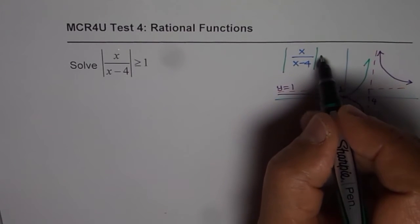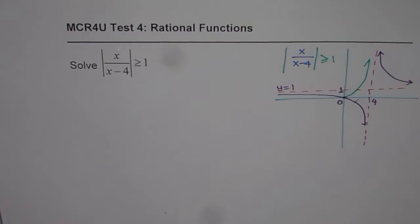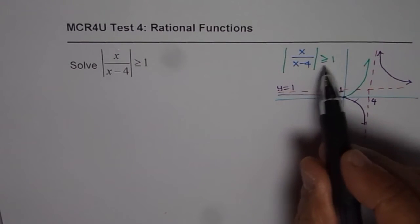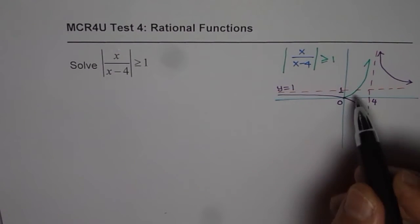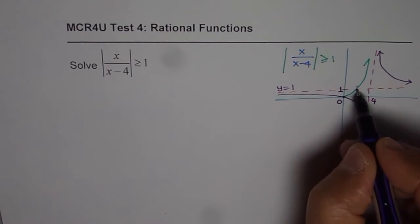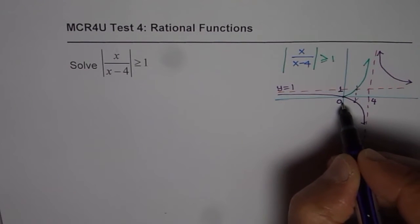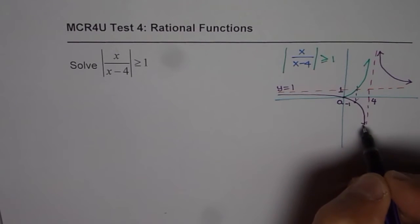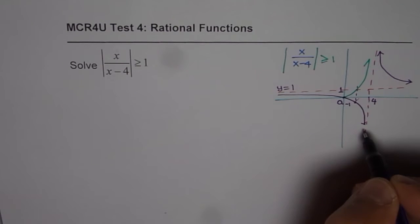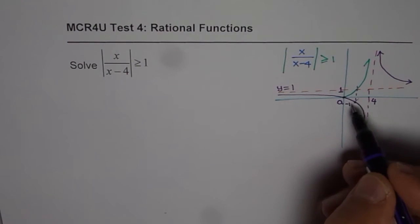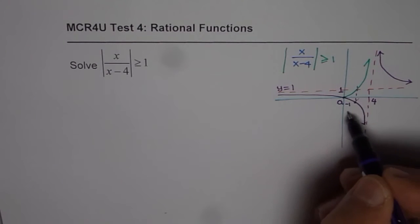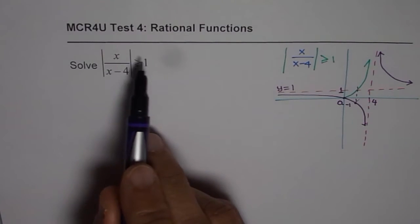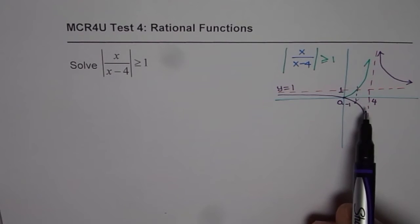Now we need to solve the inequality greater than or equal to 1. The solution is clear from the graph: one part is whenever x is greater than 4, where the absolute value is positive. But also, between a certain x value and 4, when the function equals minus 1, that will also lead to the solution. So we need to find the x value where the function equals minus 1 to identify that part of the solution.